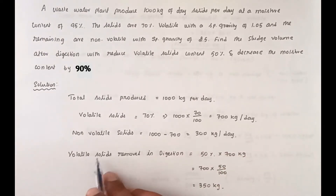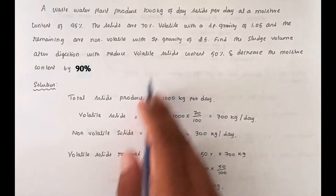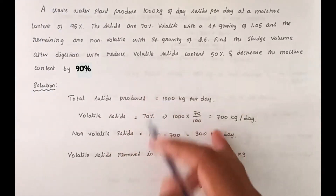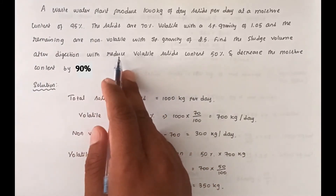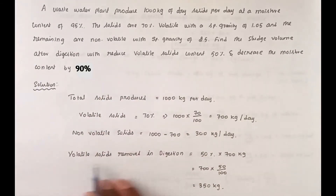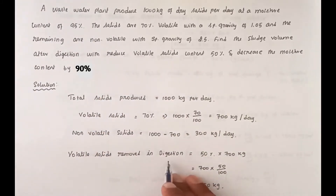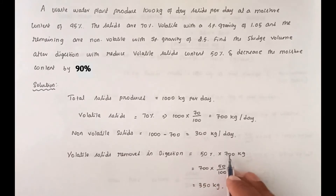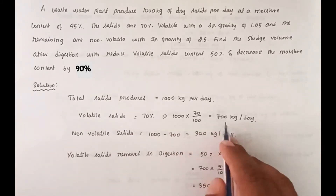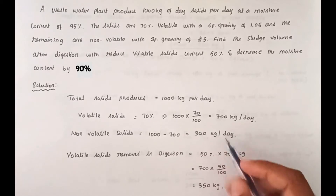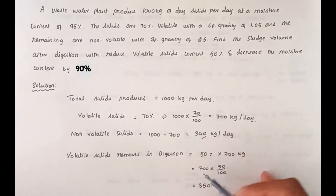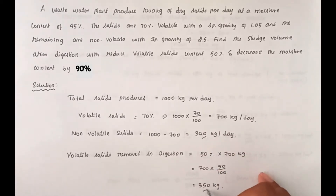In the volatile solids, we remove 50% during digestion. So 50% of 700 kg = 350 kg is removed. The remaining volatile solids = 350 kg. So total solids after digestion = 300 kg (non-volatile) + 350 kg (remaining volatile) = 650 kg.